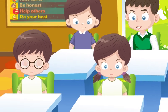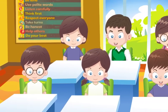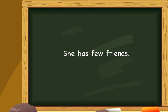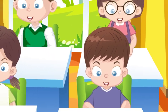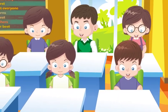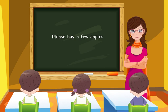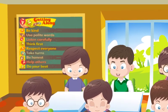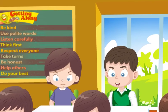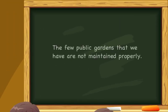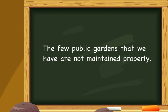'Few' is used before plural countable nouns and means very less or negligible. Example: 'She has few friends.' 'A few' is also used before plural countable nouns and means something but less in number. Example: 'Please buy a few apples.' 'The few' is also used before plural countable nouns and means all that is very less. Example: 'The few public gardens that we have are not maintained properly.'